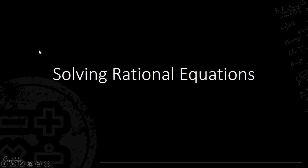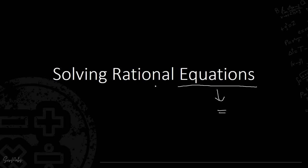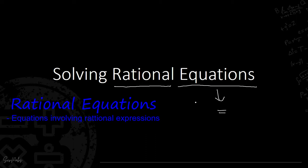This is the continuation of our lesson in solving rational equations. Before we proceed with examples, let's again define what a rational equation is. An equation always has the presence of an equal sign, and the mathematical expressions involved are in the format of numerator over denominator — so we say it is a rational equation.